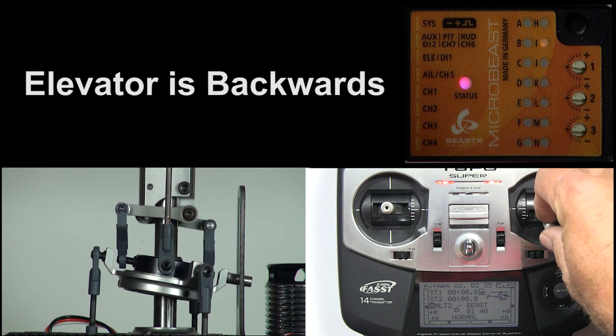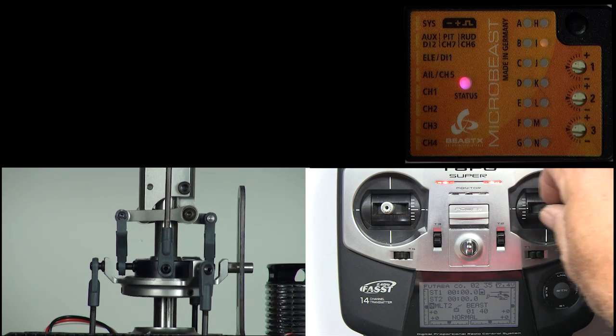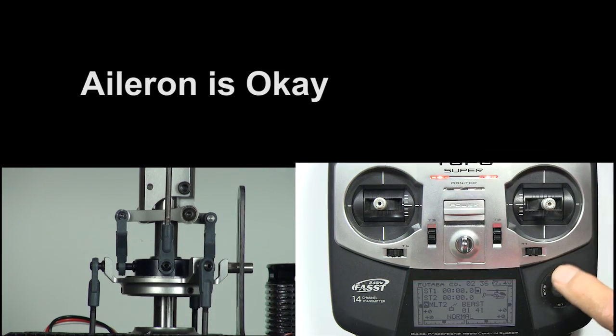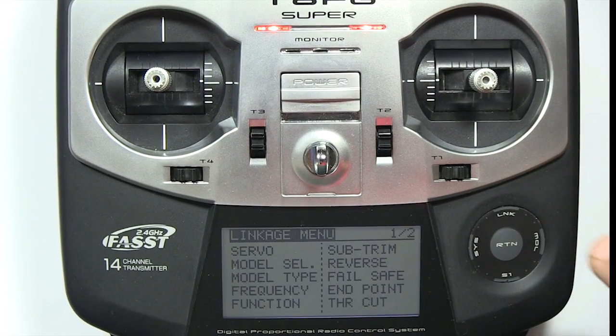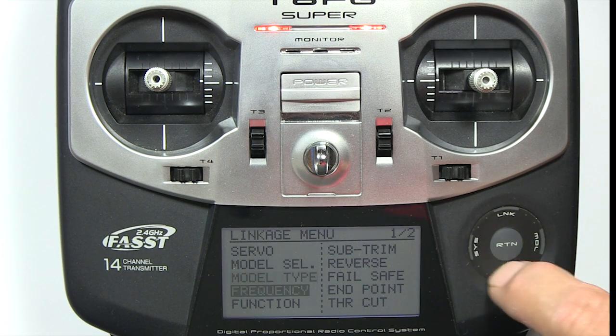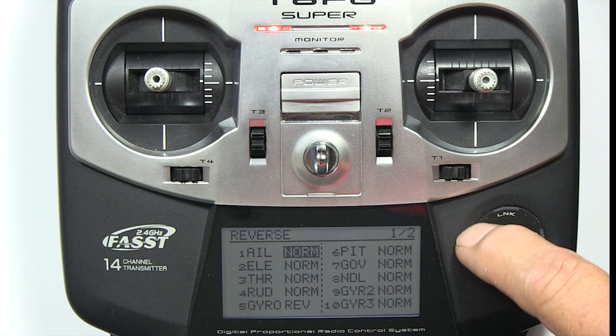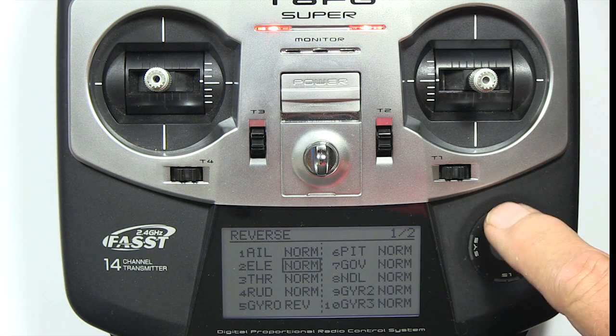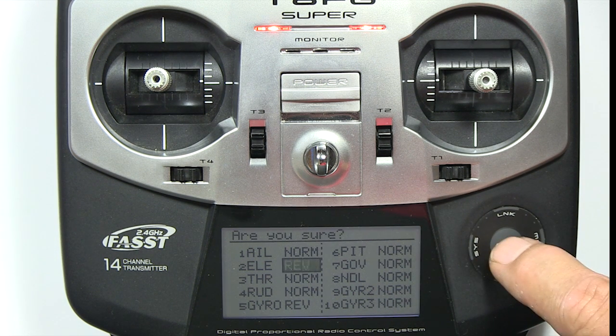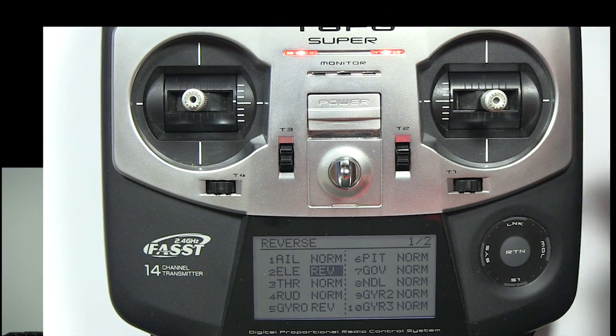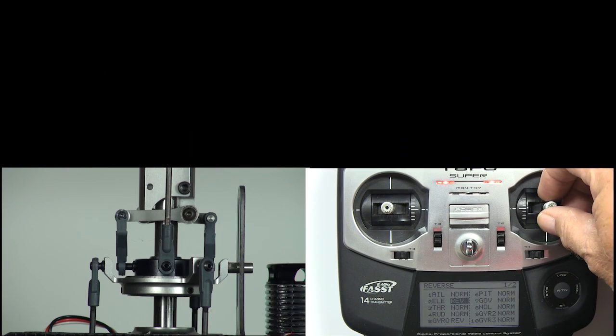Now check the direction of the elevator and aileron. As you can see, my aileron is okay but my elevator is backwards. To fix this I'll reverse the elevator in my transmitter. I'll check it again. Elevator looks good.